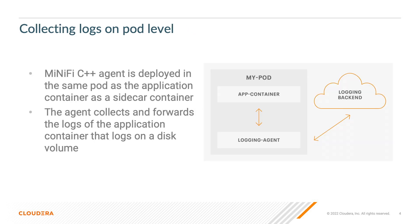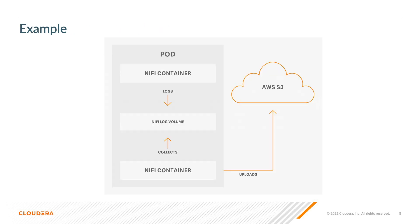The first use case is collecting logs on a pod level. If we have an application container in a pod, we can deploy MiNiFi as a sidecar container alongside it in the same pod and collect the application logs and forward them to a logging backend. One example is if we have a NiFi container in a Kubernetes pod, we can deploy a MiNiFi container in the same pod to collect the NiFi logs, transform them, and upload to AWS S3.